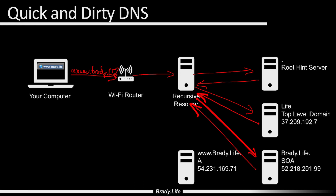It's going to respond back to the Wi-Fi router, letting the Wi-Fi router know: hey, this is where www.brady.life is. Your Wi-Fi router, your DNS device, will cache it, then it'll forward it to your computer, who will also cache this record locally. And now your computer can use that to browse to www.brady.life. It'll send an HTTP GET request, and the server will respond with the webpage.